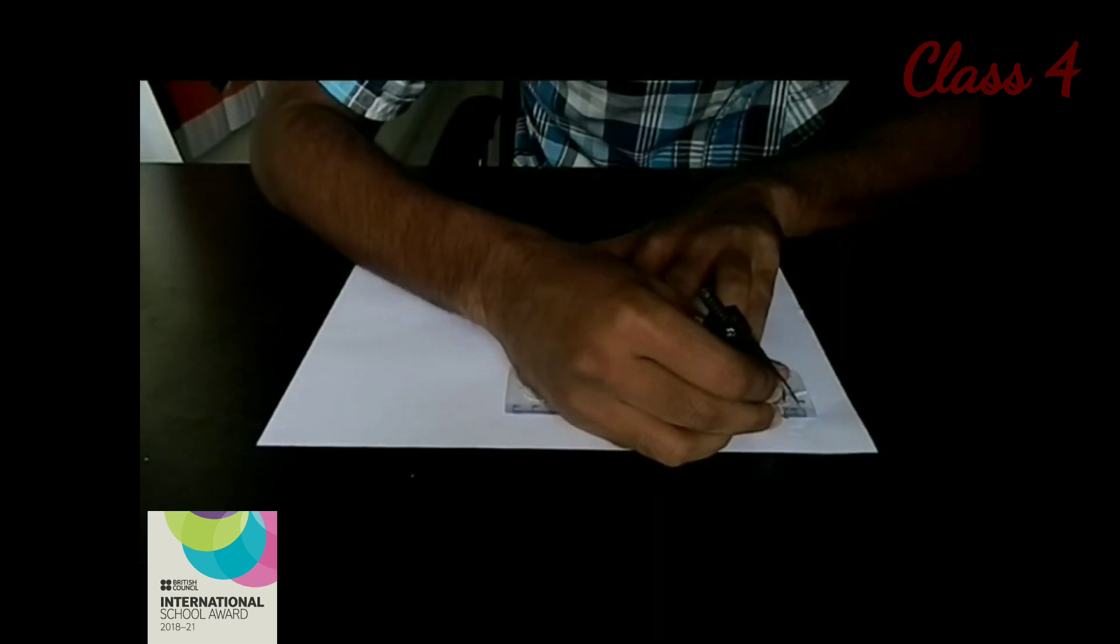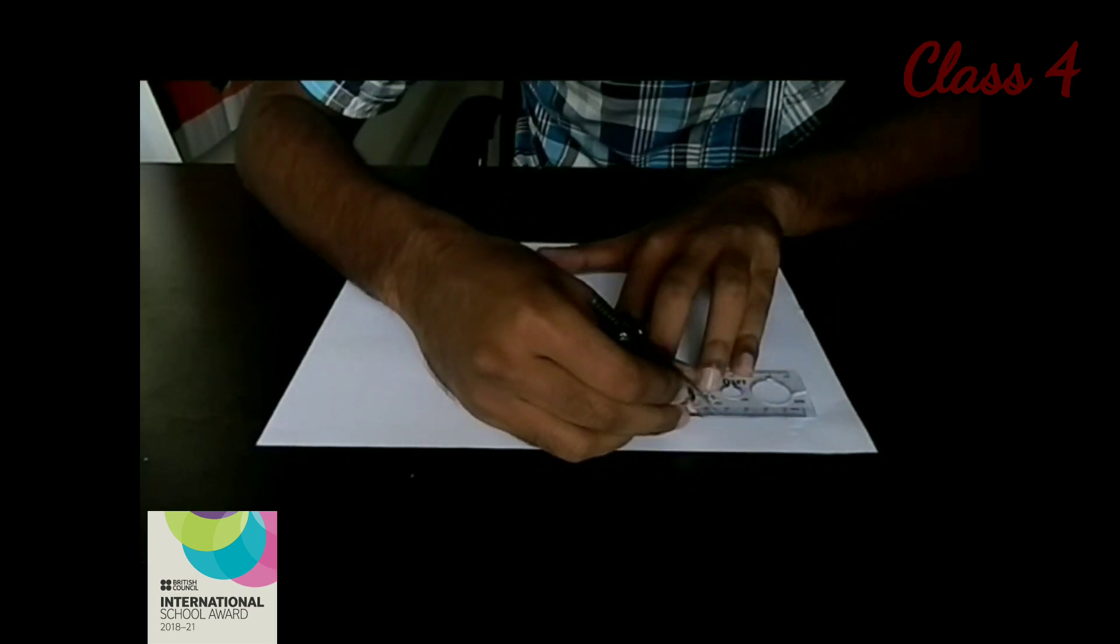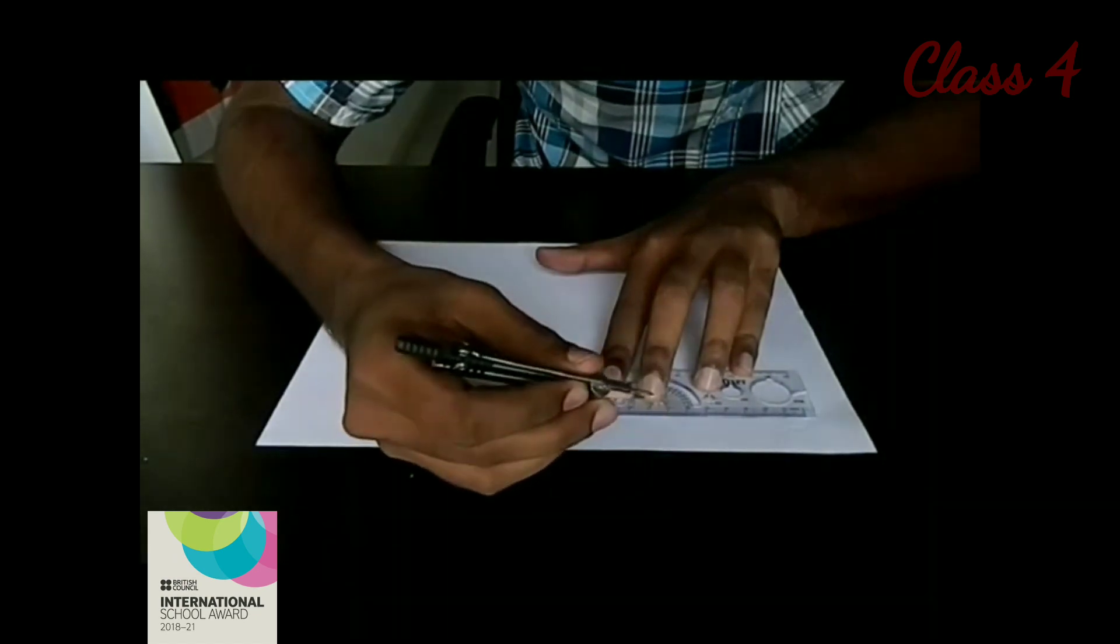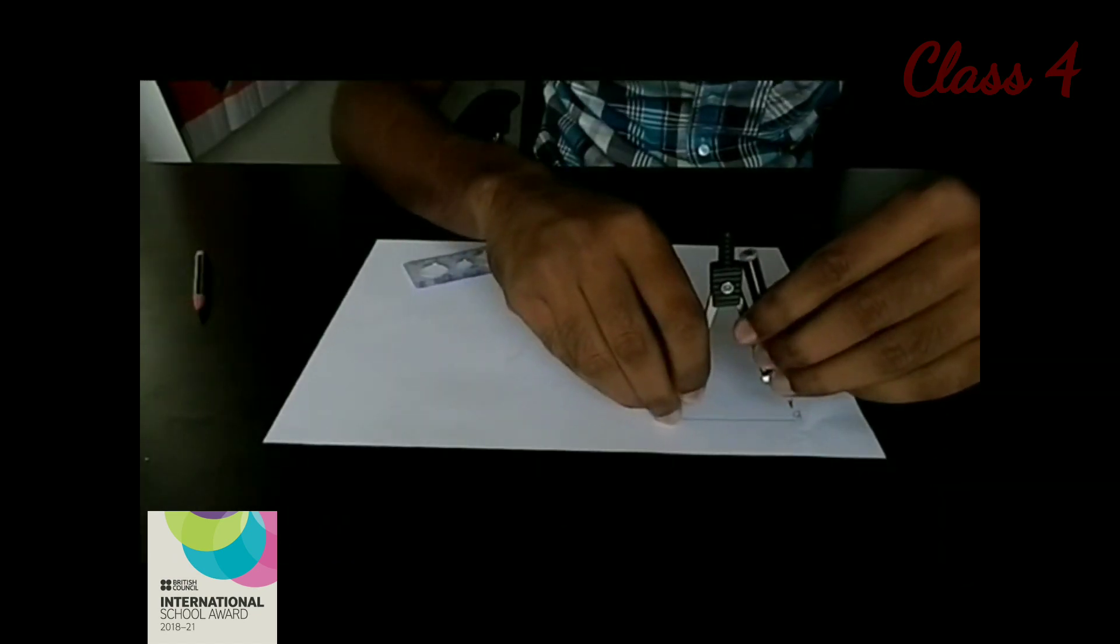Use the ruler to measure the distance while opening the compass. So using a ruler, we can measure a distance of 6 cm.